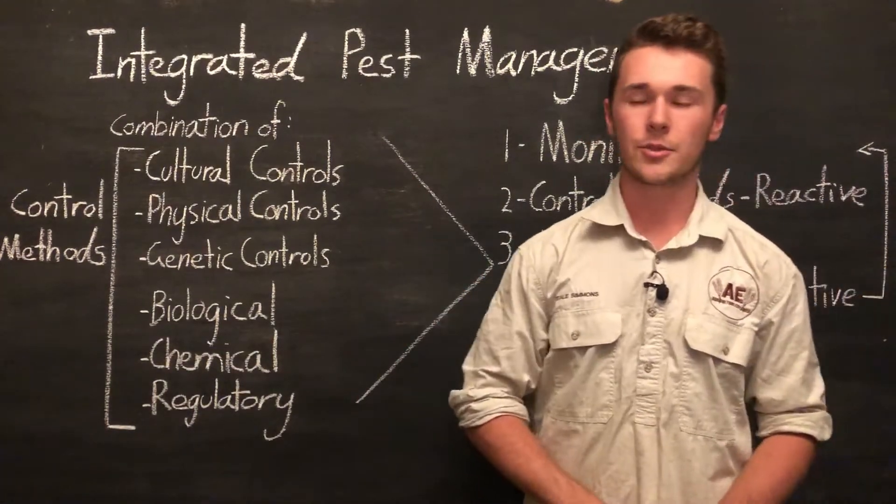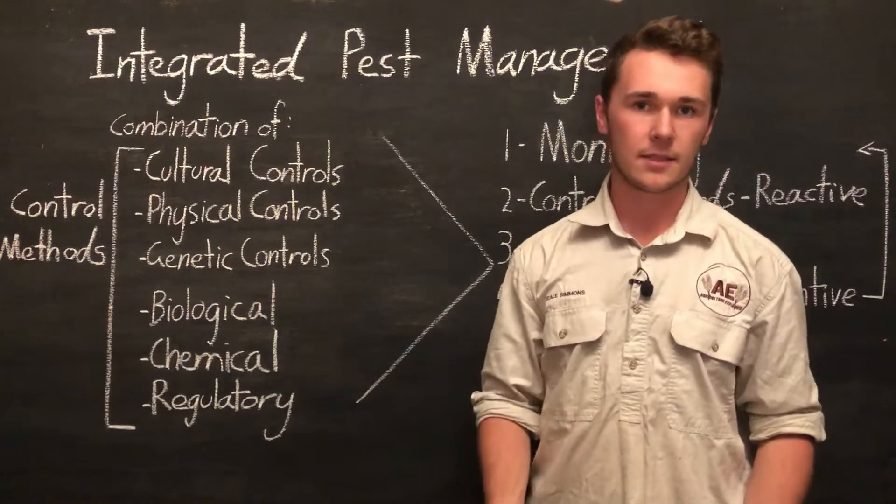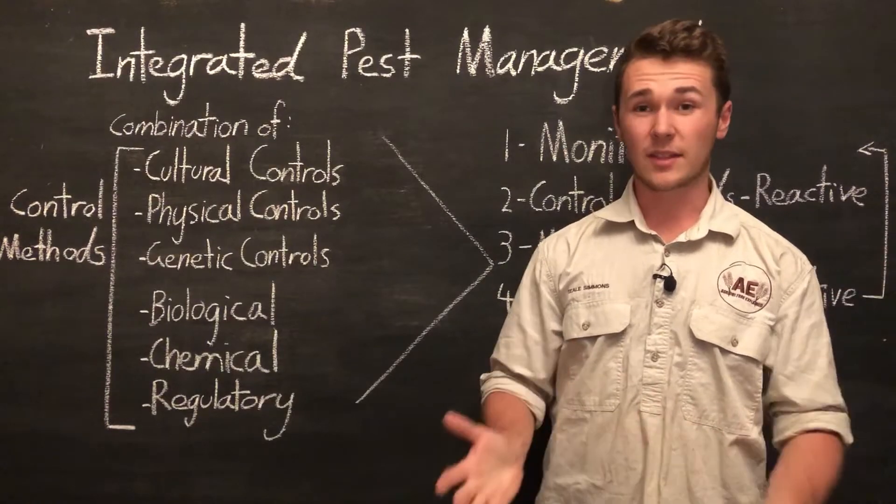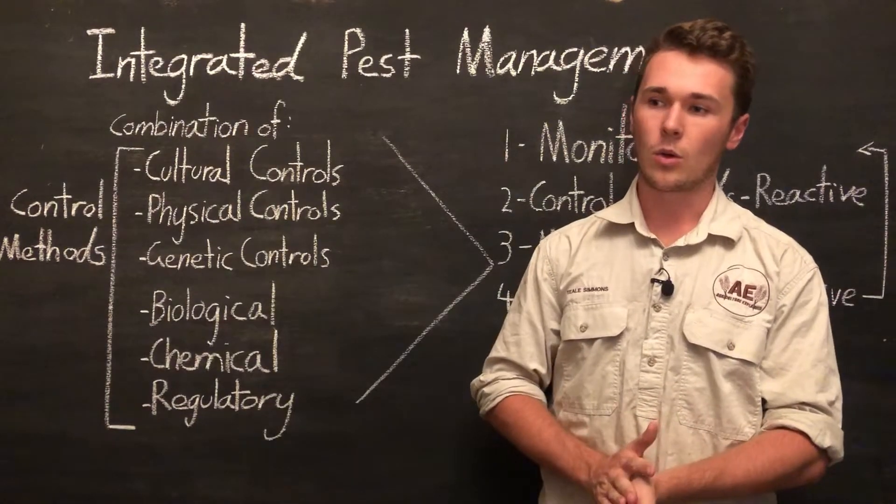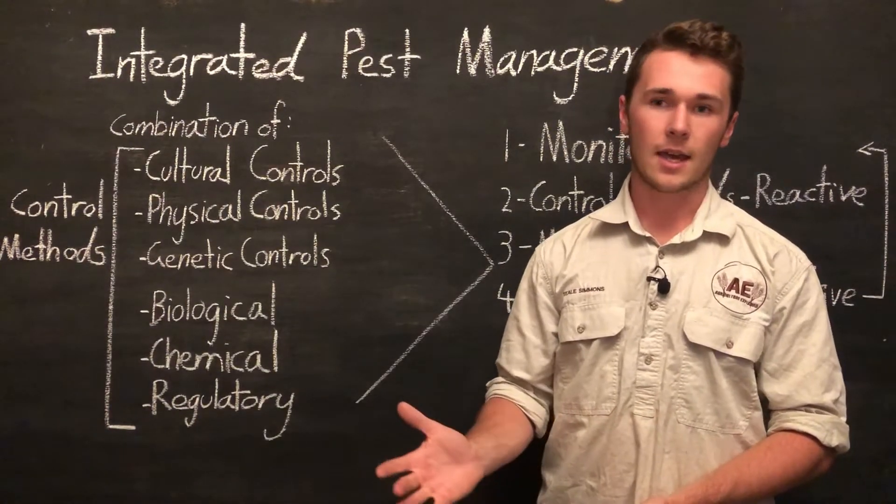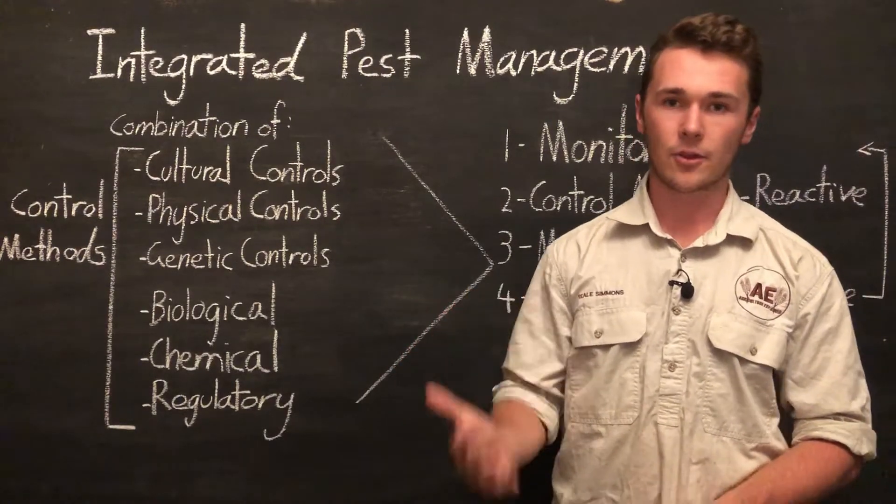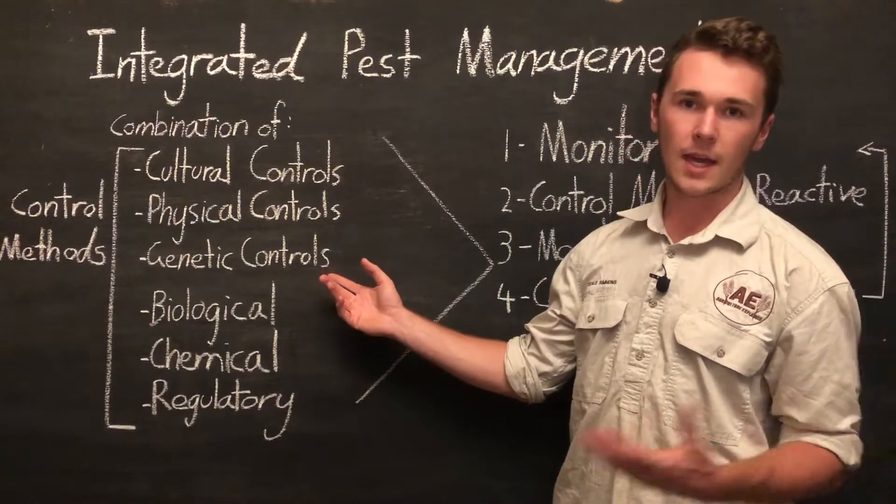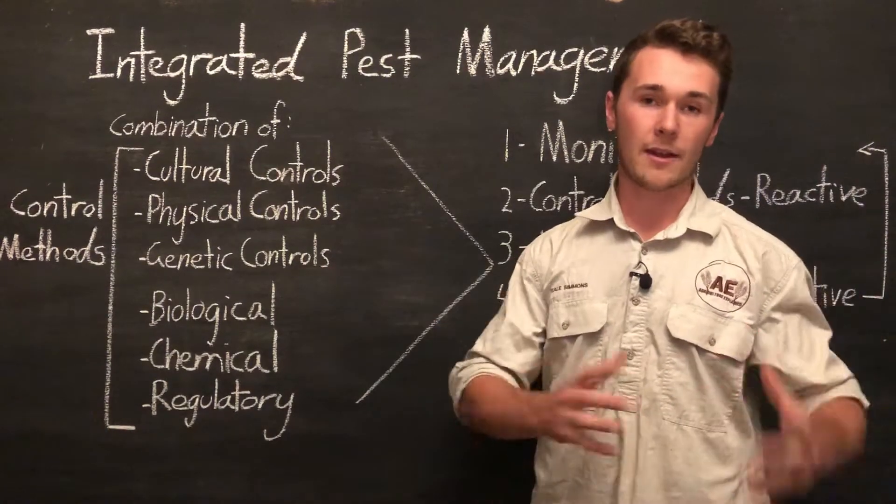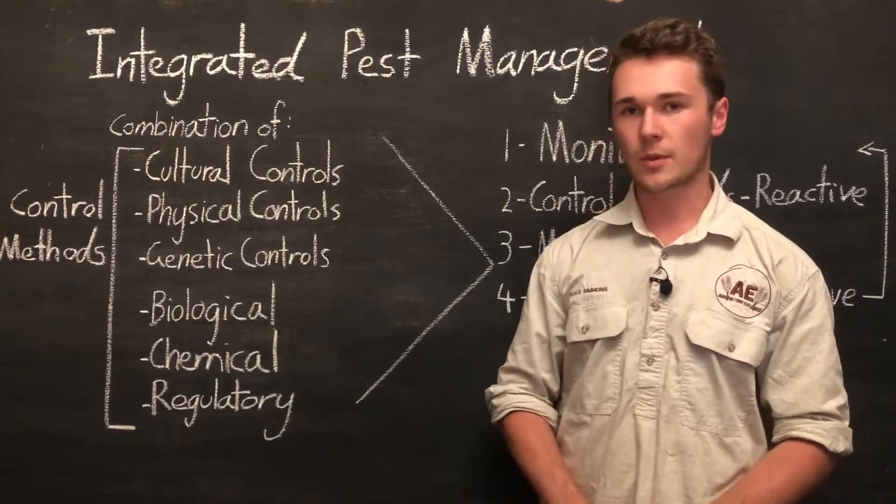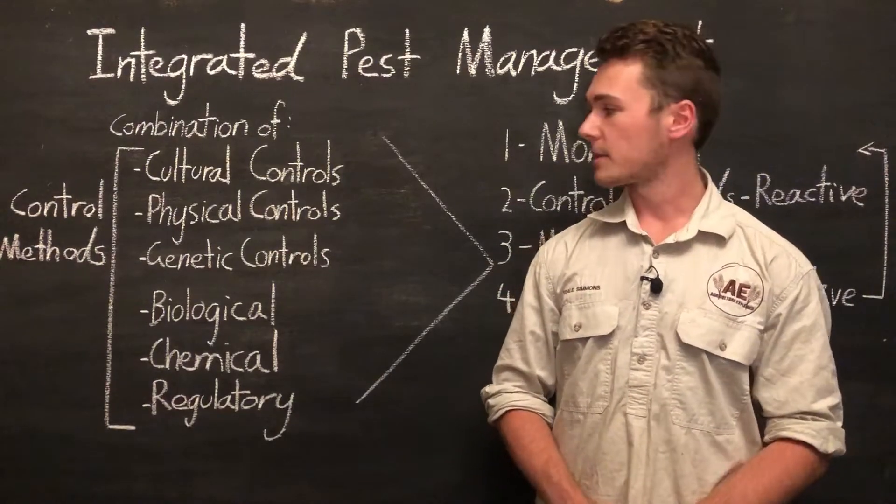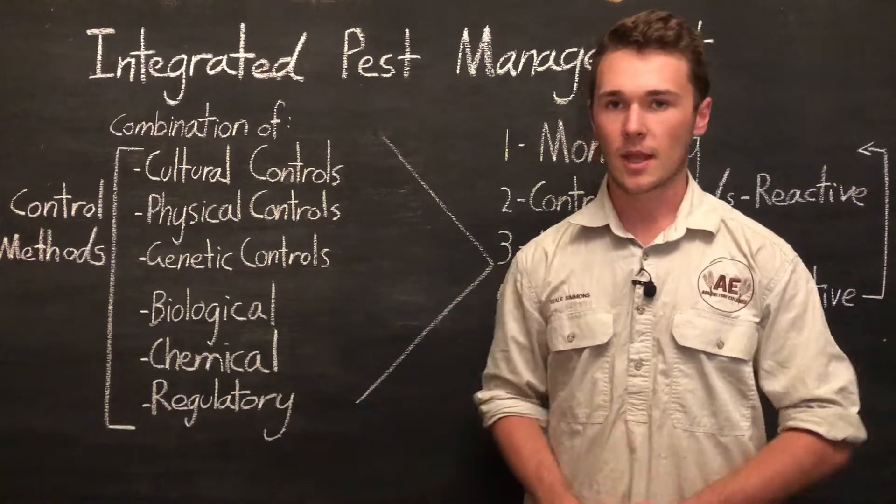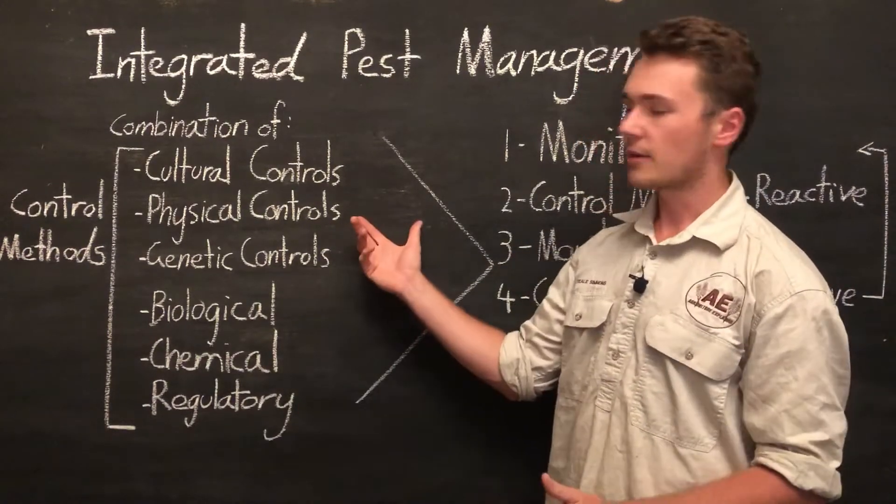Physical controls, that includes physically preventing pests to get into an area such as fences for foxes or fine meshing if you have a greenhouse you have meshing at the entries to prevent any bug getting in. So it includes barriers, traps, so fly traps or bug traps and as well as physically removing them. So going along physically removing the bugs, squishing them, anything pretty much physical.